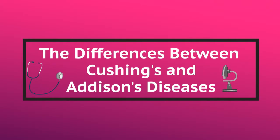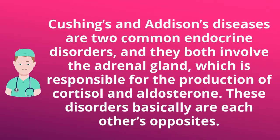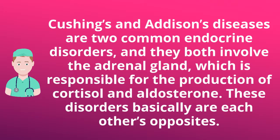Cushing's and Addison's Diseases are two common endocrine disorders, and they both involve the adrenal gland, which is responsible for the production of cortisol and aldosterone. These disorders are basically each other's opposites.